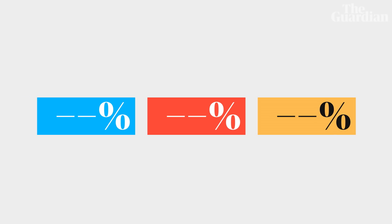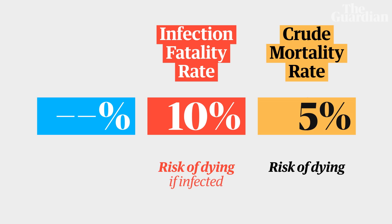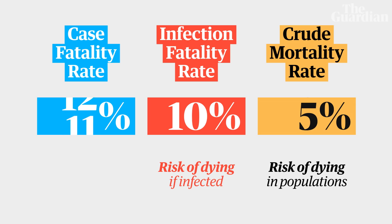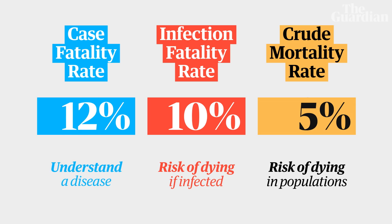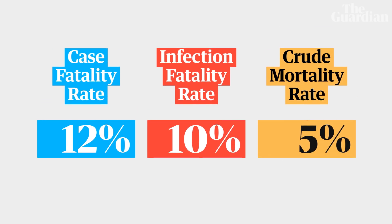So, we have three types of fatality rate: two that give us a risk of dying for those infected and whole populations, and a third that, though dealing with partial information, is incredibly useful for understanding a disease and understanding which treatments are most effective. Knowing what these numbers are for, and what information they're based on, means that we can use them more effectively.